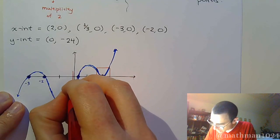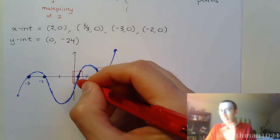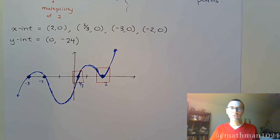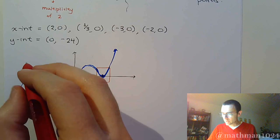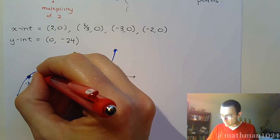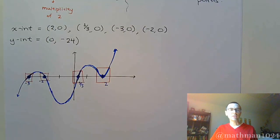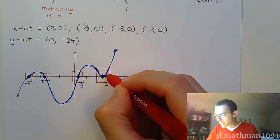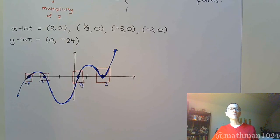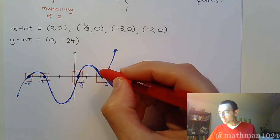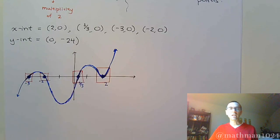If you zoom in on these guys right here that were linear, it looks, I know it's not, but it kind of looks like it's a line as it goes through that x-intercept. Same thing here. If you could zoom in there or zoom in here, it looks like it's a line, as opposed to something that bounces off like a parabola. And that's the difference between having a multiplicity of 1 where you just go through it like a line and a multiplicity of 2 where you bounce off like a parabola.